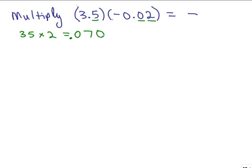So how do we want to write that final answer? You don't need this extra 0 at the end. So we just write negative 0.07. So we're putting it all together, multiplying numbers, multiplying with decimals and also working with negative numbers.